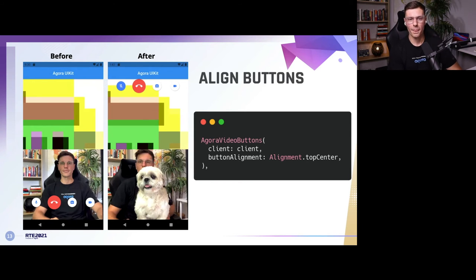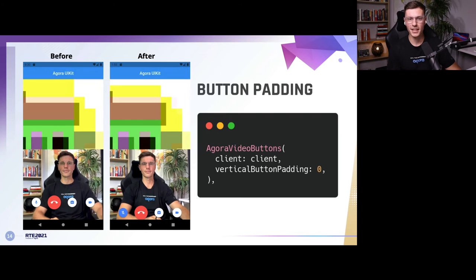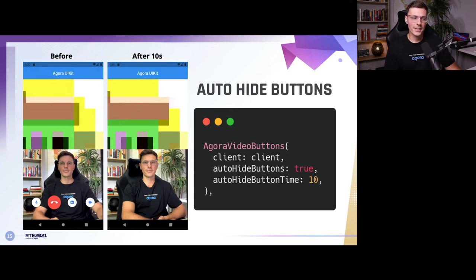You can also align the buttons. For example, if you have a cute little dog you don't want to disrupt, you can change the buttons to go to the very top by changing the buttonAlignment property to top center — there are other alignment options as well. We can also change the button padding. Normally they float a little bit above the bottom, but if you want them right against the edge you can change the padding to zero. The first style looks nicer, but you have the freedom.